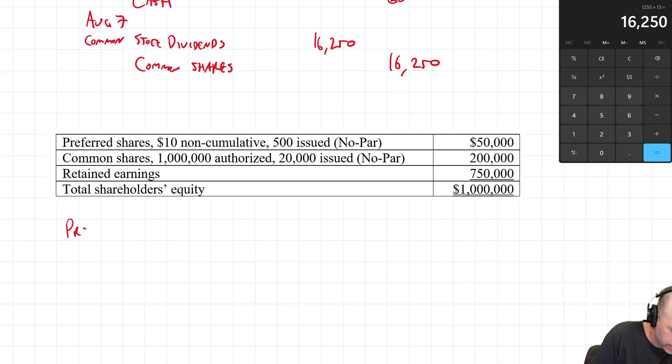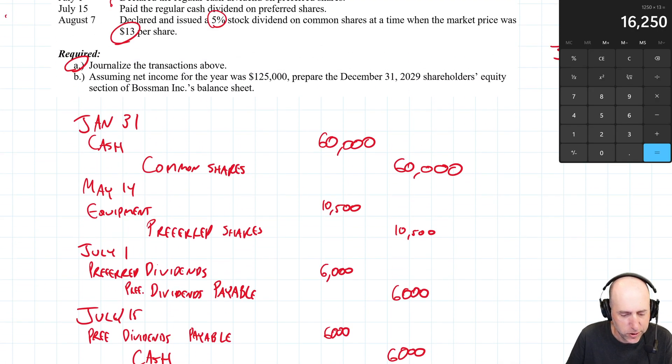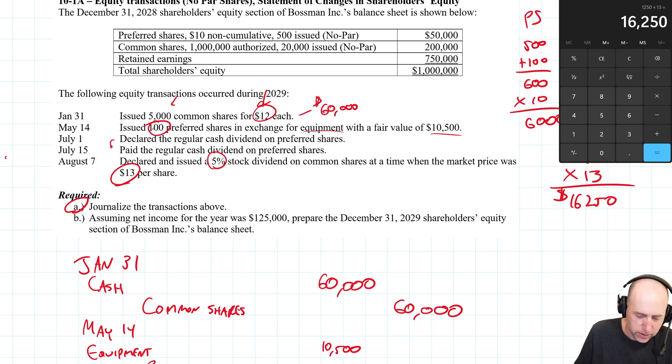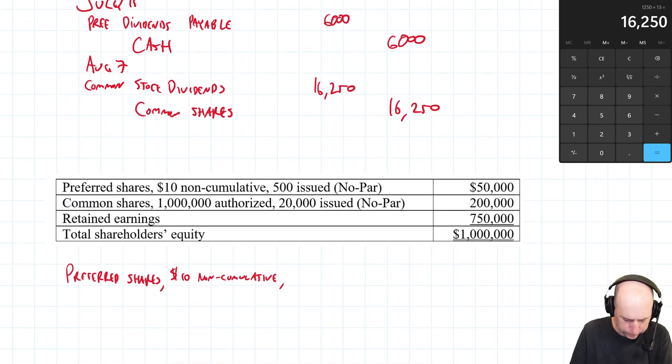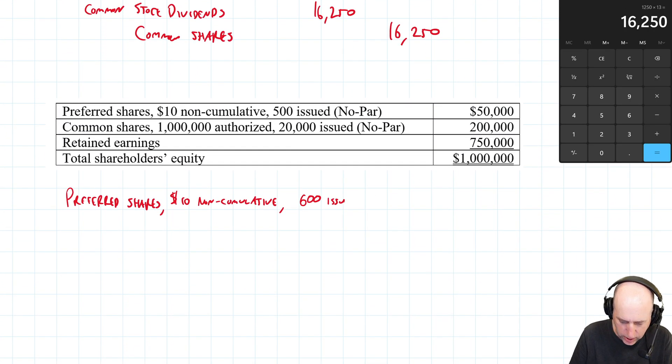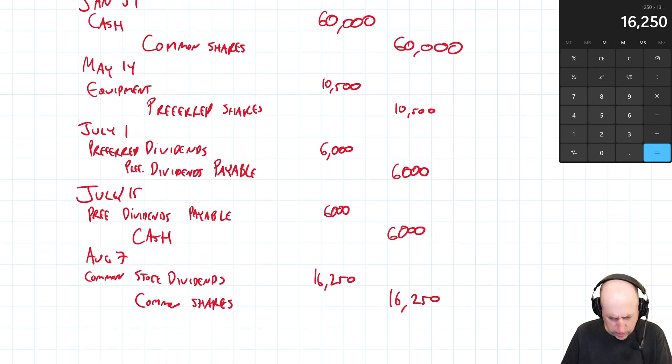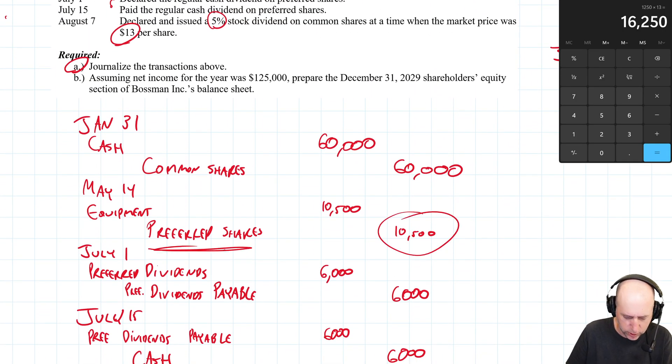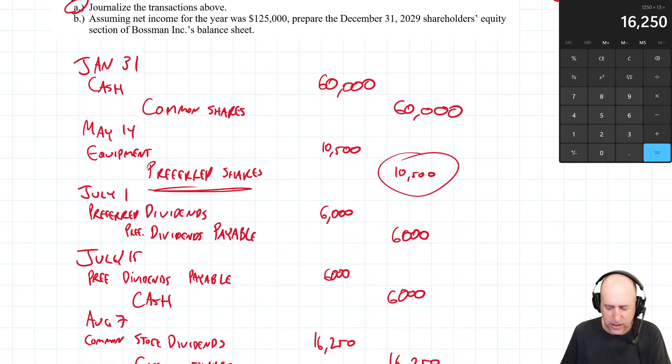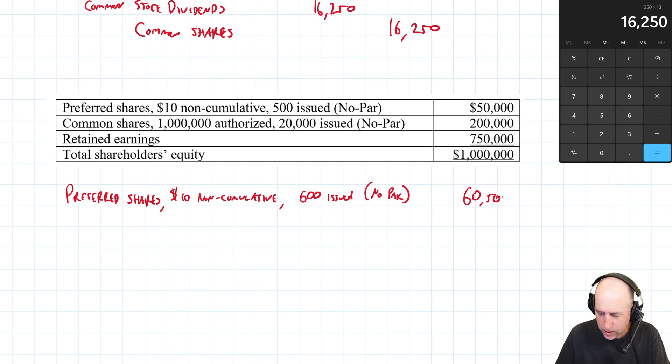So, we'll start with our preferred shares. And I'm just going to copy word for word what's in here, but just update anything that I know is out of date. So, I know it's still $10, non-cumulative. I didn't change my dividend policy. In fact, I lived up to it, right? We know we paid the dividends. 500 issued. No, it's more than 500 issued because on May 14th, we issued 100 more preferred shares. Then we paid a dividend. And that doesn't affect the number of shares. So, it's 600 issues. 600 issued. And again, no par. We'll talk about par value in 10-2. So, you have that to look forward to. Now, it was $50,000, but it's going to be more than that because I've added 10,500 to my preferred shares, right? I credit preferred shares. They started at 50. They go up by 10,500. They're going to be 60,500. That's my preferred shares.